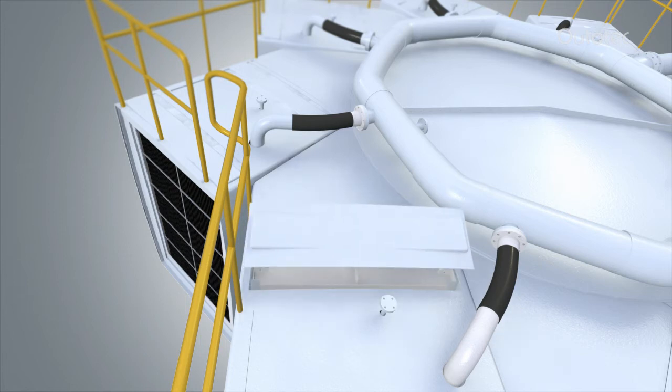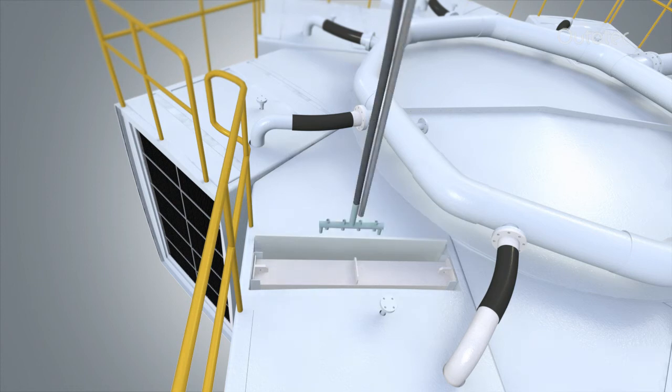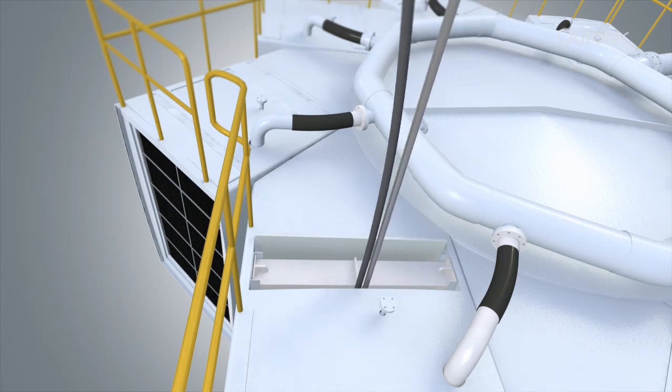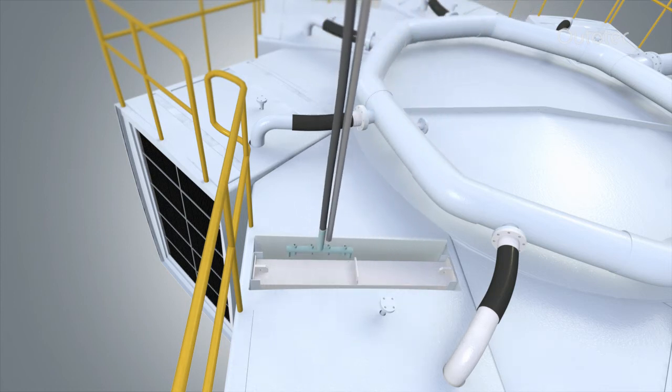After the demister box has been separated, the demisters can be washed from both sides with a washing tool. Outotec provides a washing tool that can be used from the top platform for regular maintenance of the demisters without the need to go inside the demister box.